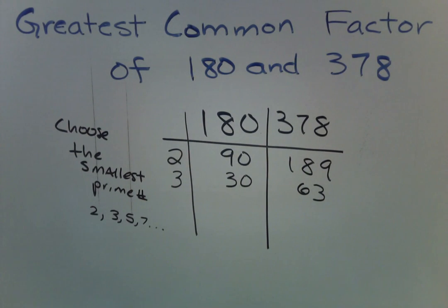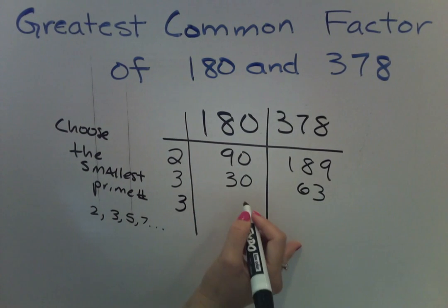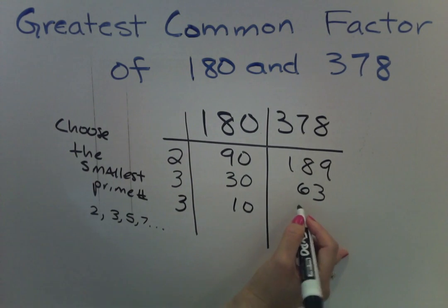The next number that we can choose that will go into 30 and 63 is 3. 3 goes into 30 10 times. 3 goes into 63 21 times.